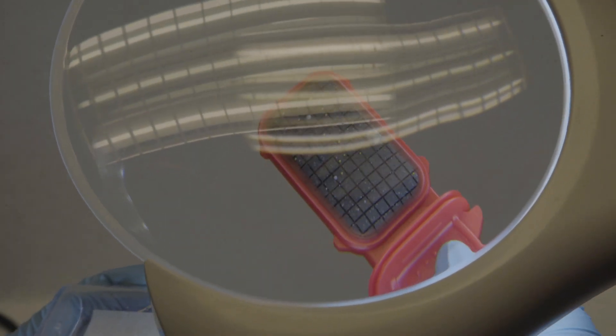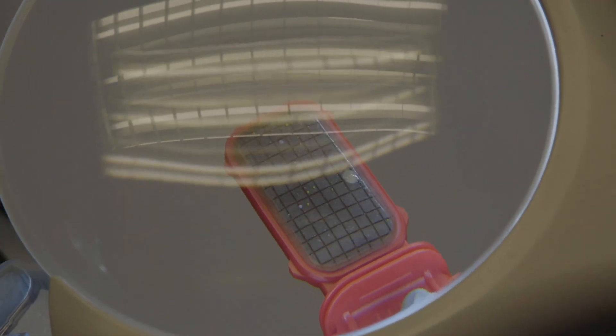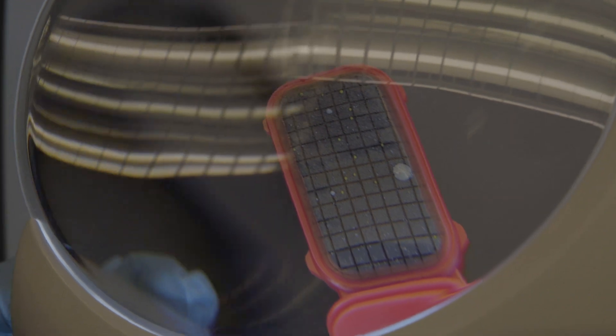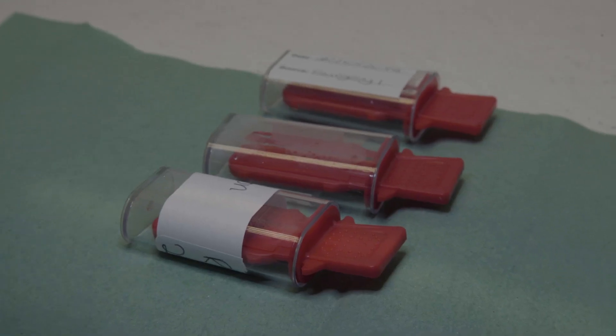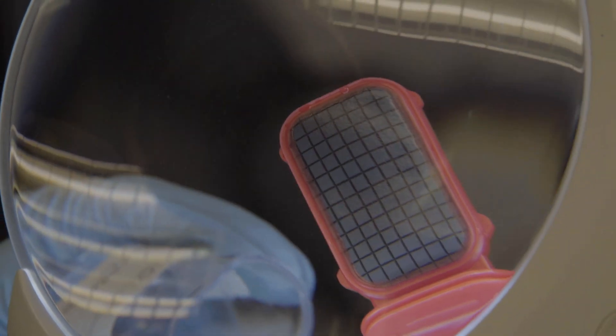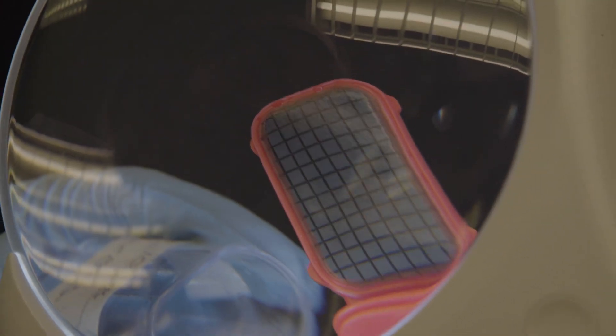After this time, count any dots that have appeared on the sampler. It is best to use a magnifying lens or to photograph the sampler. Angling the sampler may help avoid flash from the lighting, making it easier to identify colonies.